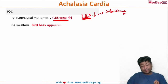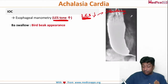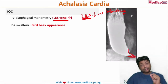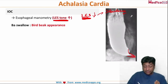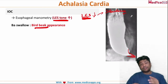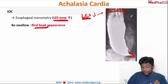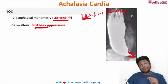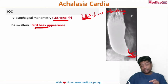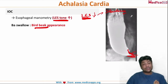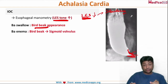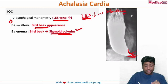The second investigation we can do is a barium swallow — here we will have a bird beak appearance. You can see there is absolute tightening of the lower esophageal sphincter giving the bird beak appearance. In carcinoma esophagus, the narrowing will also be thin but with irregular filling due to the mass of the carcinoma; here the filling is very regular. An important note: bird beak appearance on barium enema is seen in sigmoid volvulus — so both are very important to know.